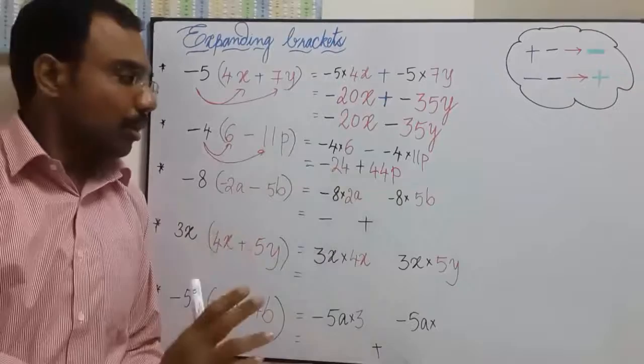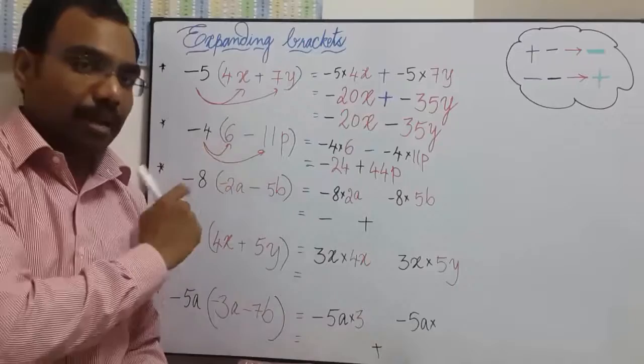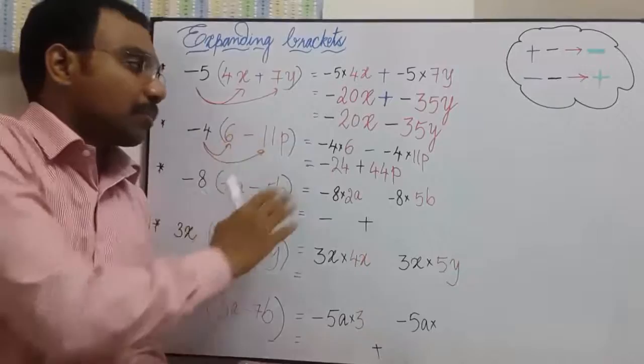This is a key rule. Whenever you see a negative number before brackets being multiplied, the signs of the terms change. Positive term becomes negative and negative term becomes positive. I hope you can remember this.